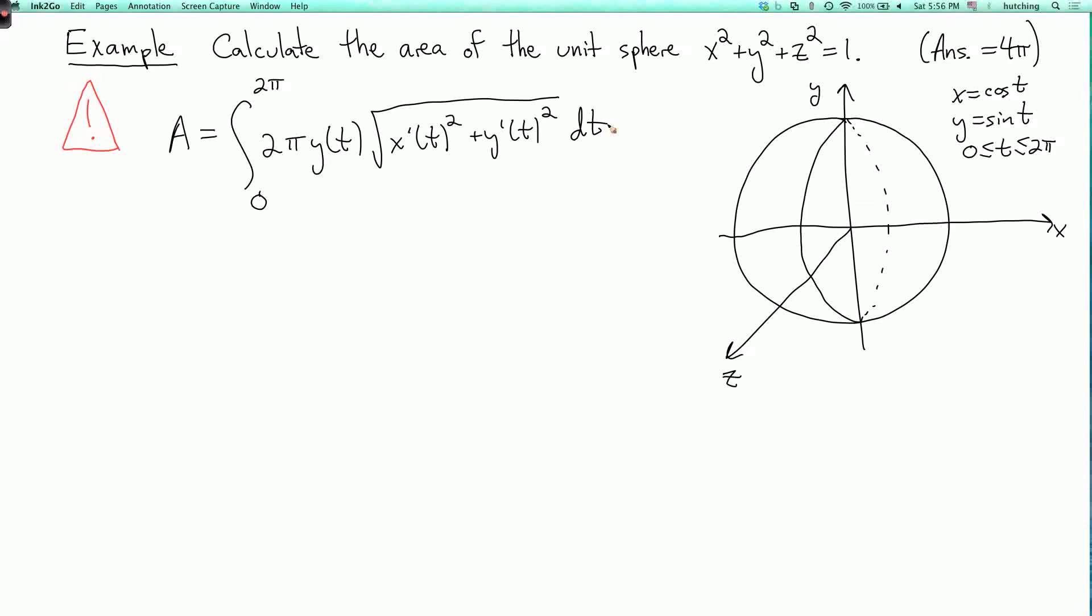However, this is actually wrong. Why is it wrong? Well, suppose I just take the upper half of the unit circle, and I rotate that around the x-axis. Then if you look at the picture, you see that I'm going to get the entire unit sphere. So if I just rotate the upper half of the unit circle, I get the whole unit sphere. If I were to rotate the whole unit circle around the x-axis, I would cover the unit sphere twice and I would get double the answer that I want.